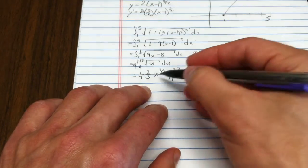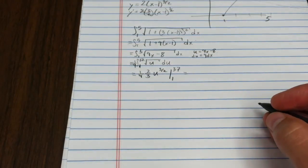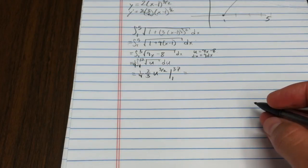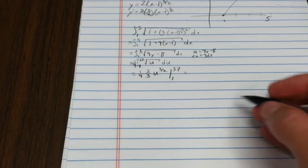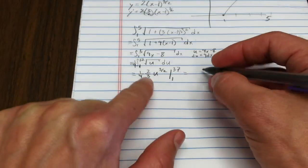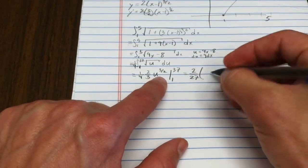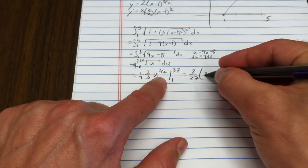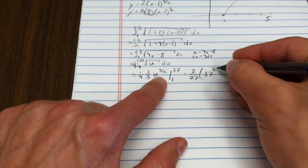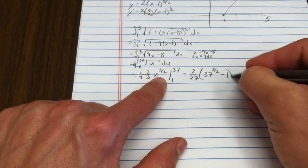37 doesn't come out too evenly, so what I have is 2/27 times 37^(3/2) minus 1^(3/2), which is 1.